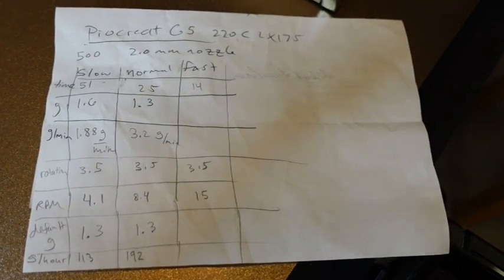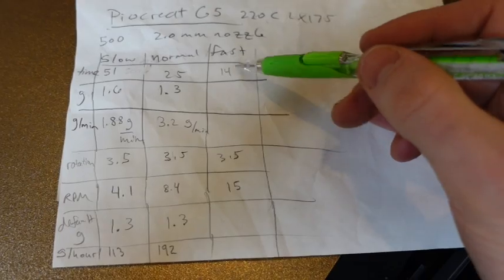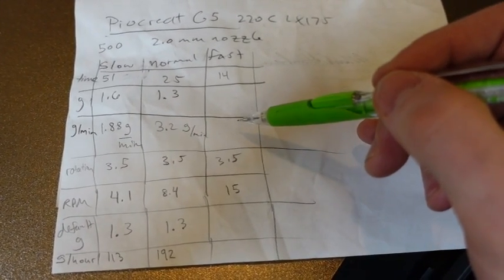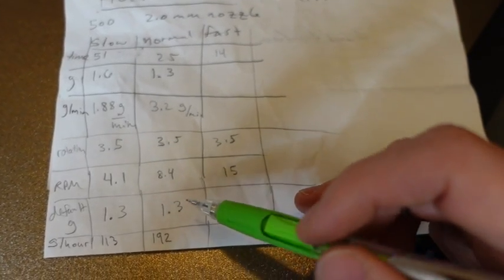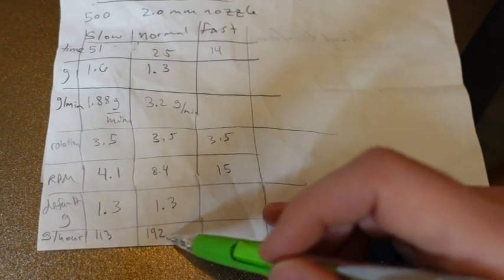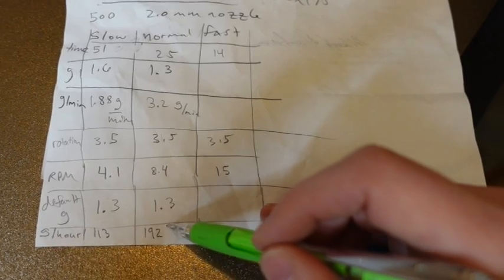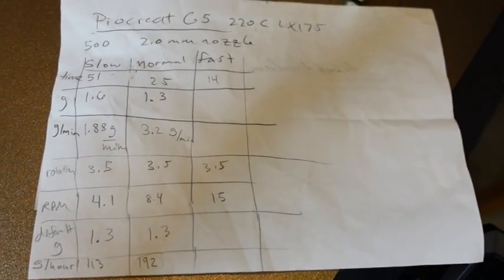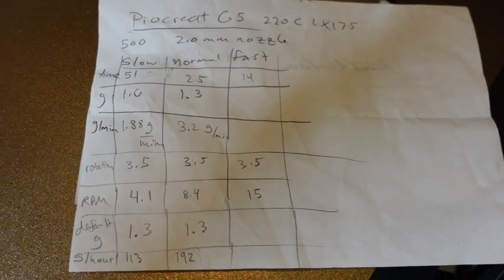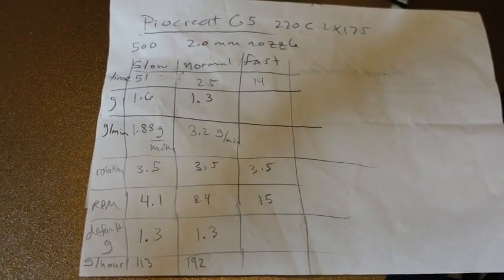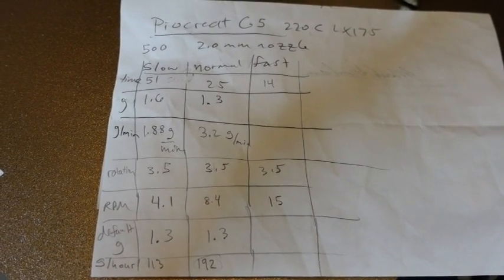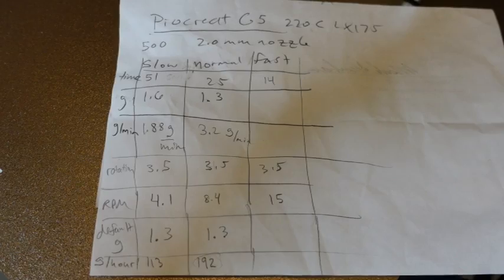So, here are the results. I wouldn't run this thing in the fast mode because the extruder doesn't spin due to the stepper not having enough torque. But the maximum grams per hour this produces is about 192 grams per hour. That's a key constraint of this machine. And it's a question people ask about often. This is with LX 175 PLA at 220C.